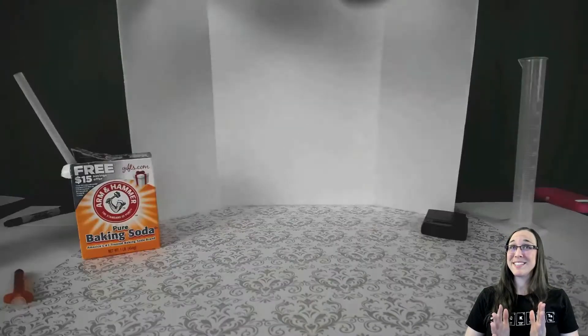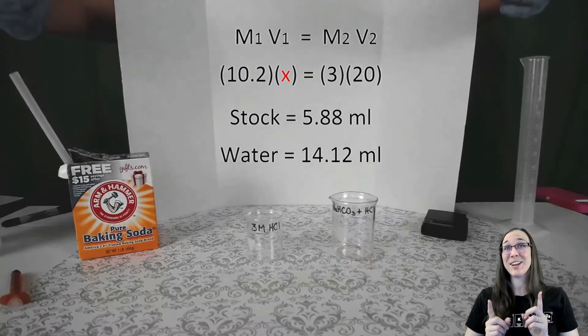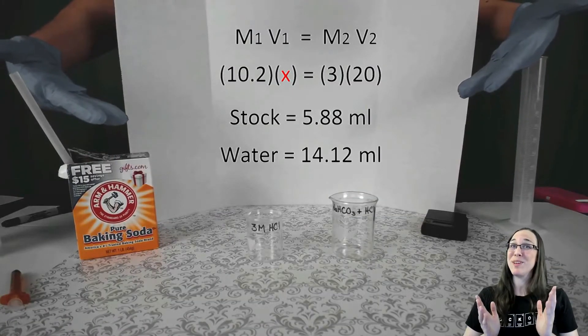Alright, label your beakers. We're gonna be making 3 molar hydrochloric acid starting from 10.2 molar. We need M1V1 equals M2V2.